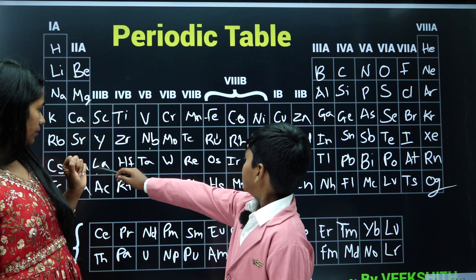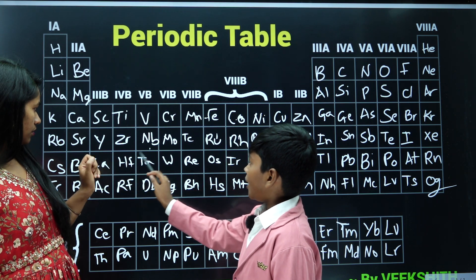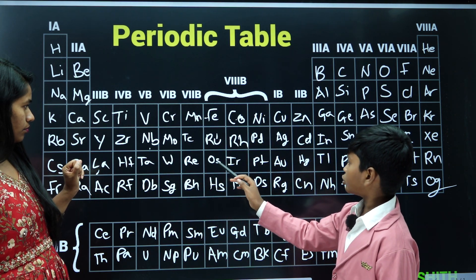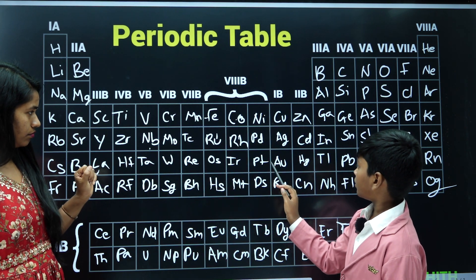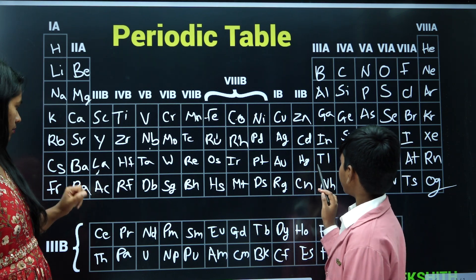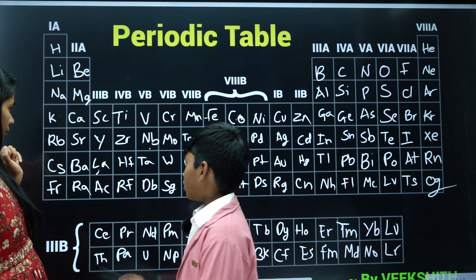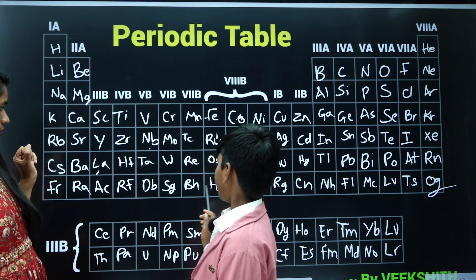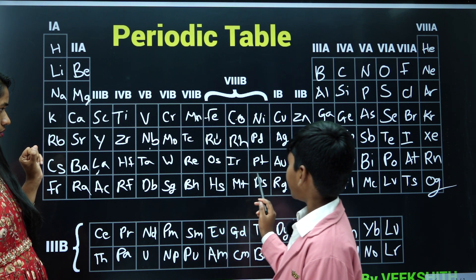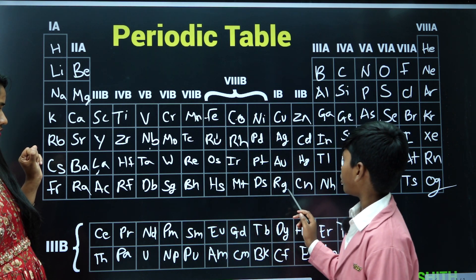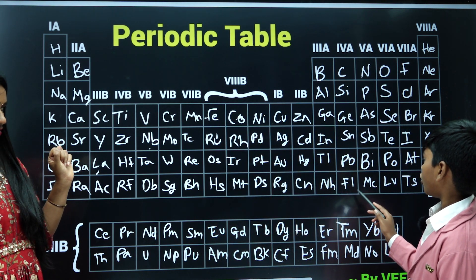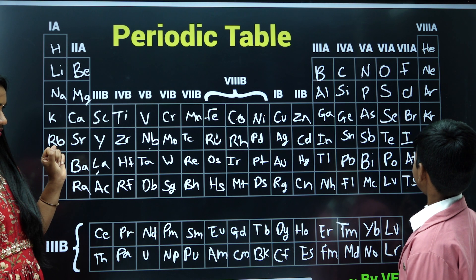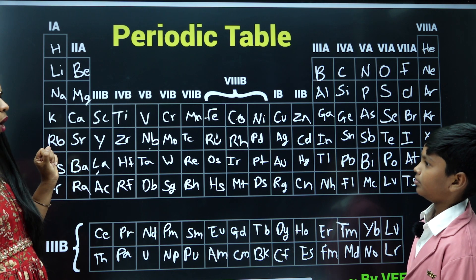5D? Hafnium, tantalum, tungsten, rhenium, osmium, iridium, platinum, gold, mercury. Rutherfordium, dubnium, seaborgium, bohrium, hassium, meitnerium, darmstadtium, roentgenium, copernicium, nihonium, flerovium, moscovium, livermorium, tennessine and oganesson. Okay, those elements also completed.